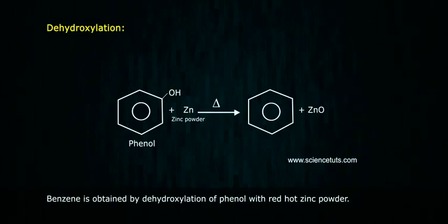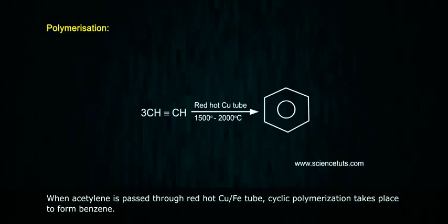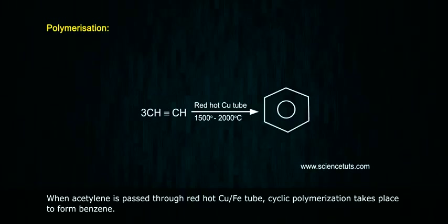Decarboxylation: Benzene is prepared by heating a mixture of sodium benzoate and sodalime. Dehydroxylation: Benzene is obtained by dehydroxylation of phenol with red-hot zinc powder. Polymerization: When acetylene is passed through a red-hot copper or iron tube, cyclic polymerization takes place to form benzene.